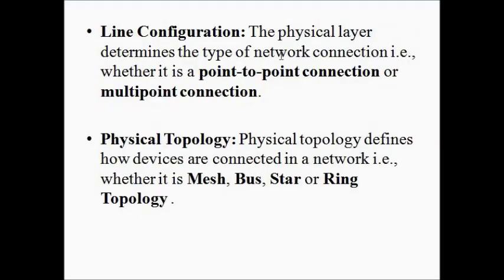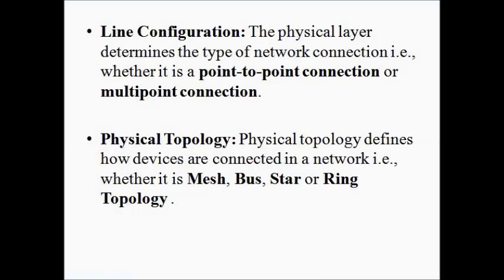The next function is line configuration. There are two types of network connections: point-to-point connection and multipoint connection, and the physical layer determines which type is used. In point-to-point connection, there is a dedicated link between two devices and the channel is entirely reserved for communication between those two devices alone. In multipoint connection, several devices share a single communication link and the channel capacity is shared by all the devices.